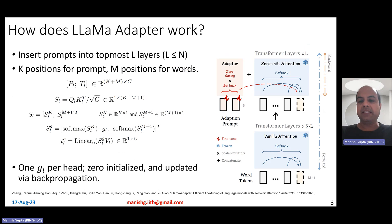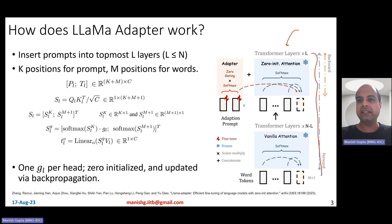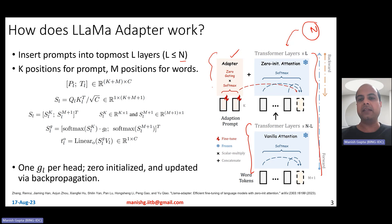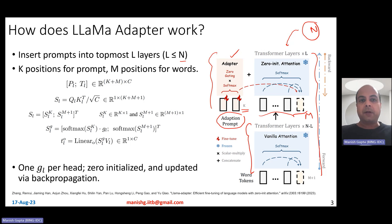So how does LLaMA adapter work? On the right side, the blue-colored thing is a typical transformer architecture with N different layers. In the last L layers, you add these adapters; in the first N minus L layers there are no adapters. You have these adapters as the first K tokens, and then there are M tokens of typical words. So we insert prompts into the topmost L layers — K positions for the prompt and M positions for the words.